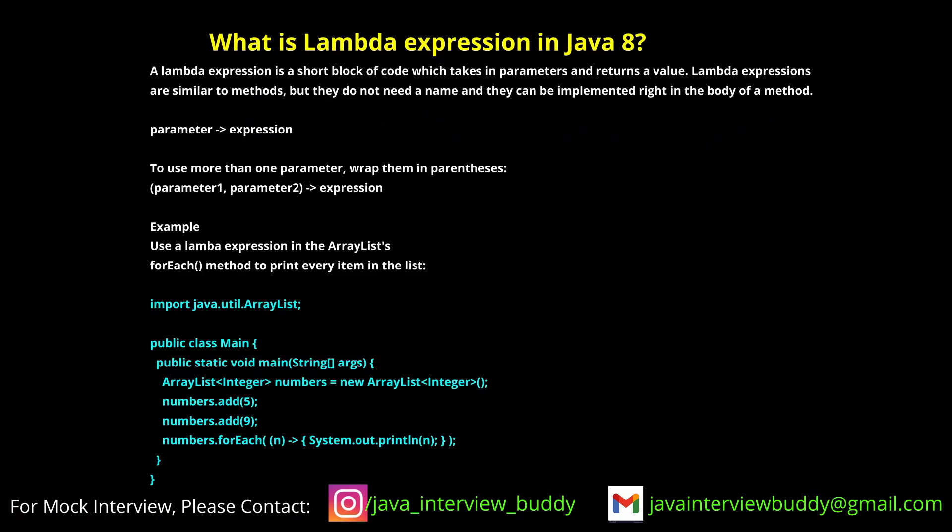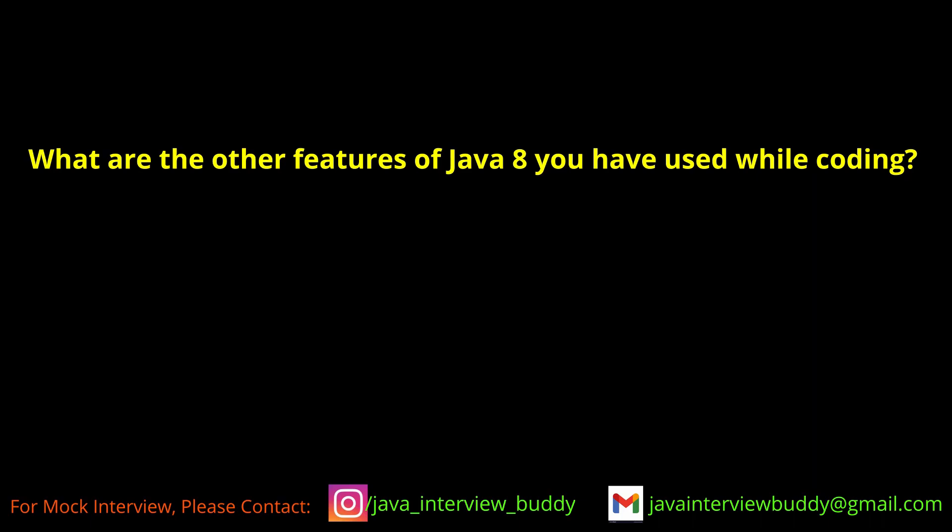What are Lambdas? Lambda makes calling a functional interface easy — it automatically creates the implementation for a functional interface. For example, the Runnable interface has only one method, run. Using Lambda, we don't need to write the full implementation code. As for other Java 8 features, we have used Lambdas, default methods in interfaces, method references, and mainly streams — those are the basic things we have used as part of Java 8.